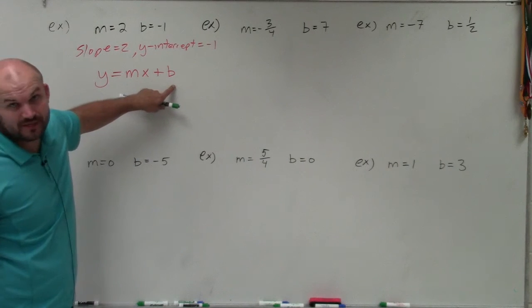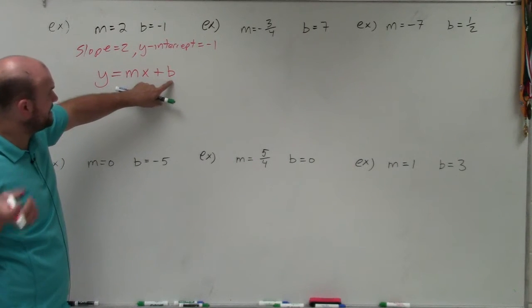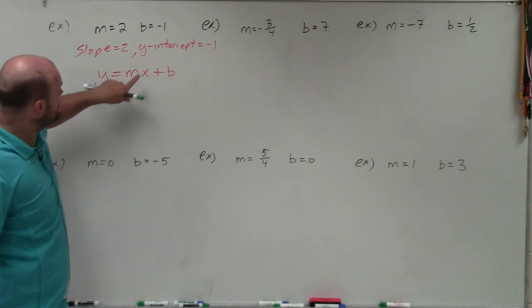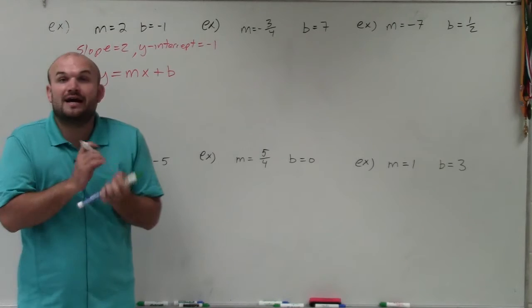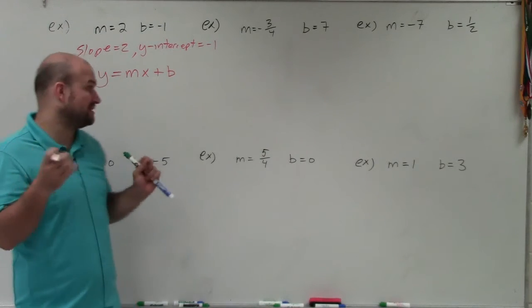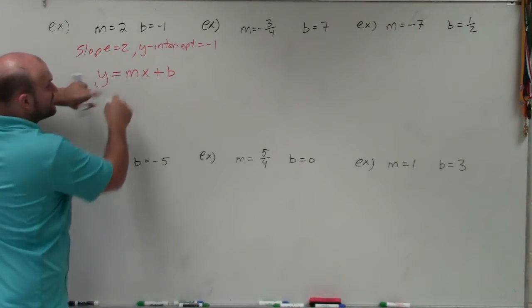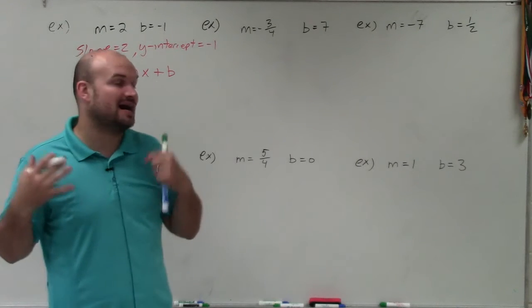Now, notice b is going to be your constant, and b is going to be where the graph crosses the y-axis, where m is going to be a ratio, the comparison of the change in y over the change of x between any two points on the line, where y and x represent infinitely many points on the line.